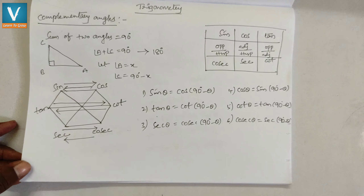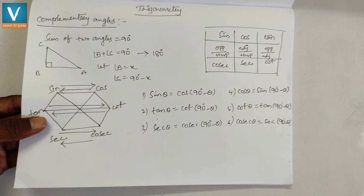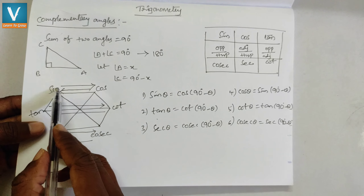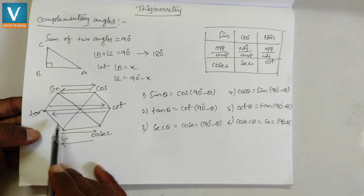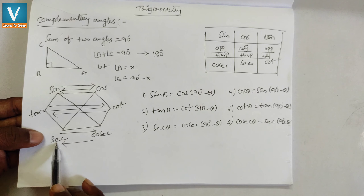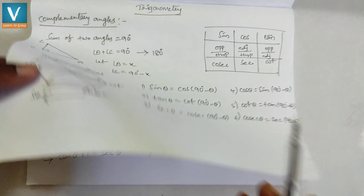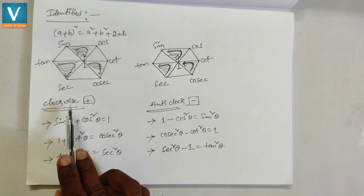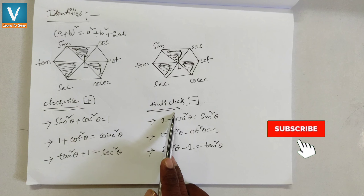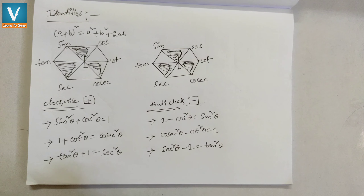Today we discussed complementary angles — sine to cos, cos to sine, tan to cot, cot to tan, sec to cosec, and cosec to sec — and trigonometric identities using the clockwise and anti-clockwise directions on the hexagon. It is a very easy method. I hope you understood. Thank you so much.